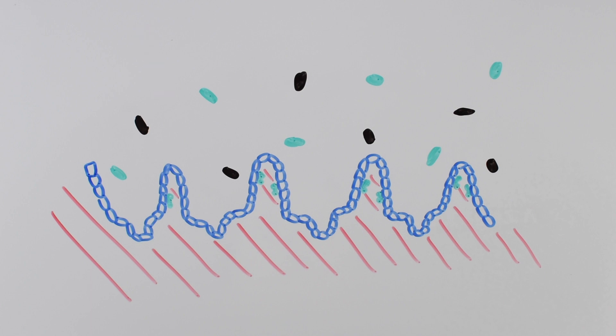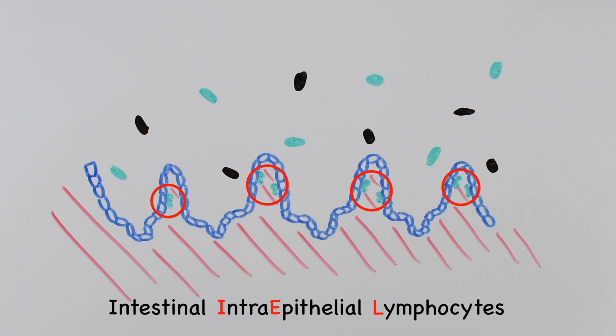These researchers focused on the role of the gut immune cells, not only because they're the first line of defense against infection, but also because the researchers thought they may help with normal gut function. They focused on a specific type of immune cell called intestinal intraepithelial lymphocytes, or IELs for short.